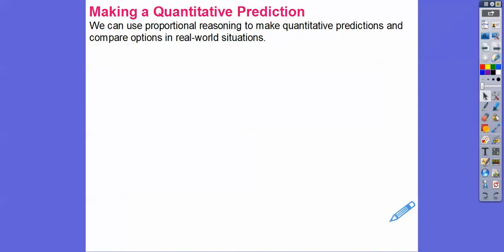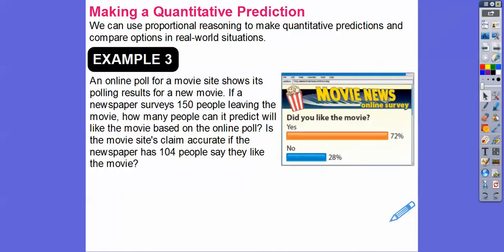We can use proportional reasoning to make quantitative predictions and compare options in real world situations. So it's just more of the same. So an online poll for a movie site shows its poll results for a new movie. If a newspaper surveys 150 people leaving the movie, how many people can it predict that will like the movie based on the online poll? Did you like the movie? Yes. 72% of them liked the movie. No. 28% of them said no.